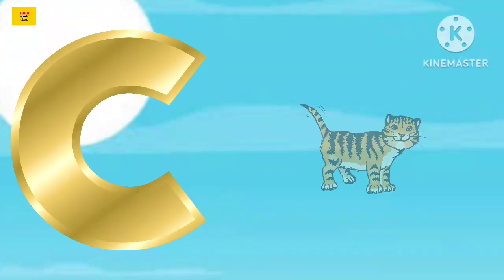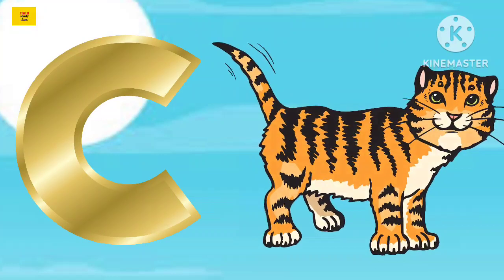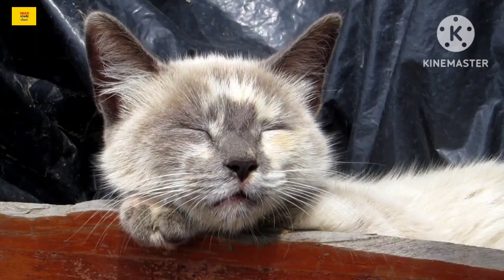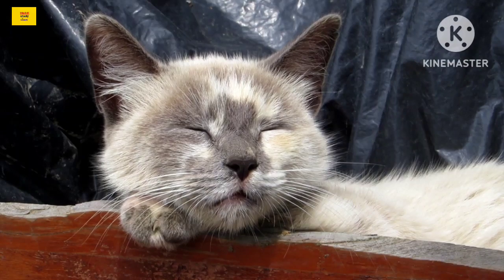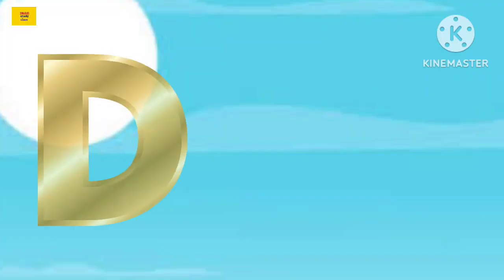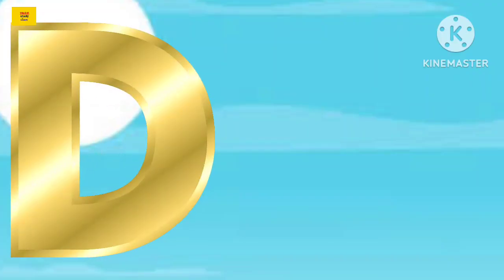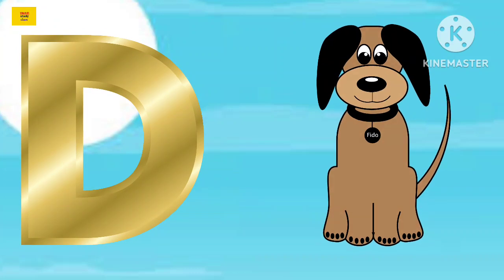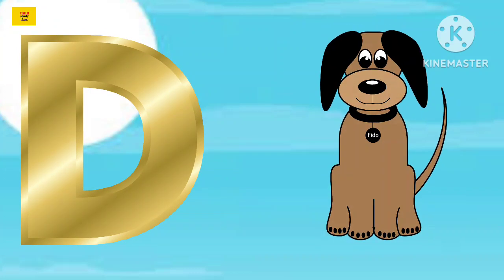C for cat, cat means billy. D for dog, dog means cotta.